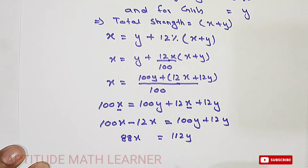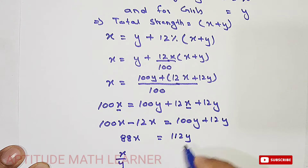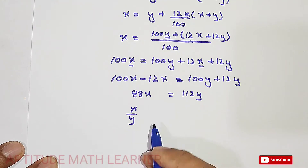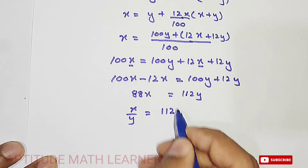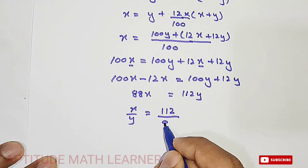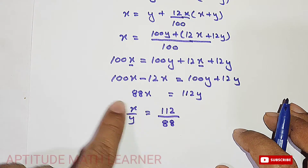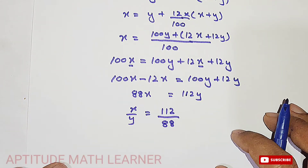Now we find the ratio of boys to girls: x/y = 112/88. We need to simplify this fraction by dividing both numerator and denominator by their common factor.